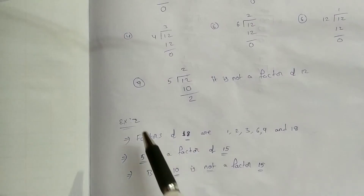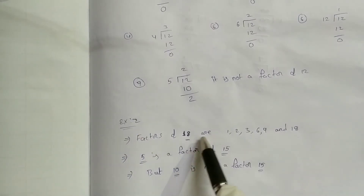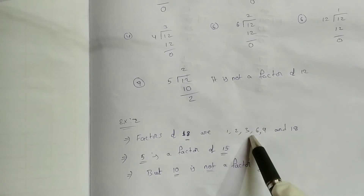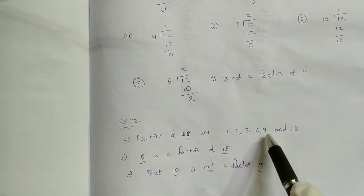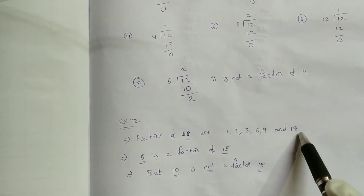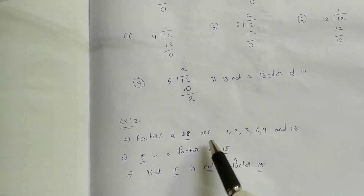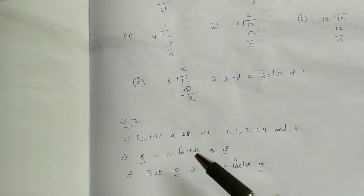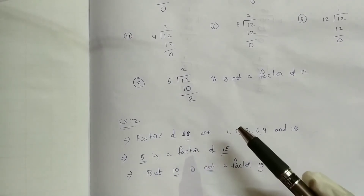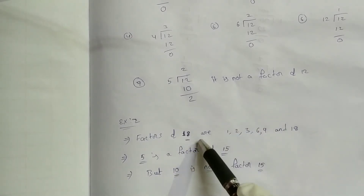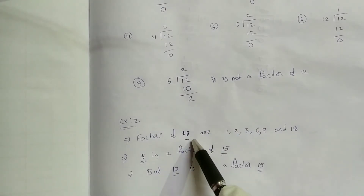Example 2: Factors of 18 are 1, 2, 3, 6, 9, and 18. It is allowed to verify these the same way. This is the complete list of factors of 18.